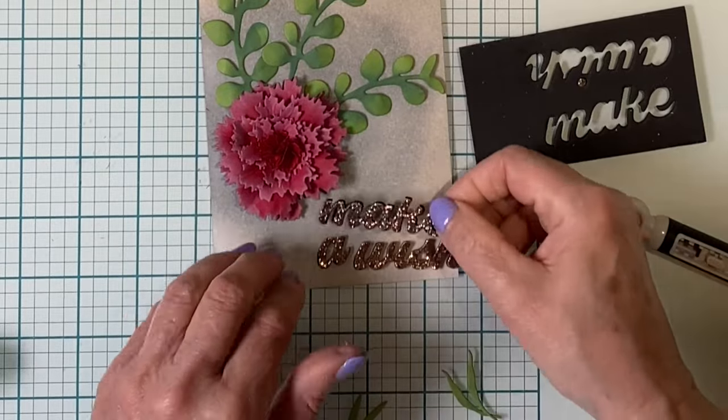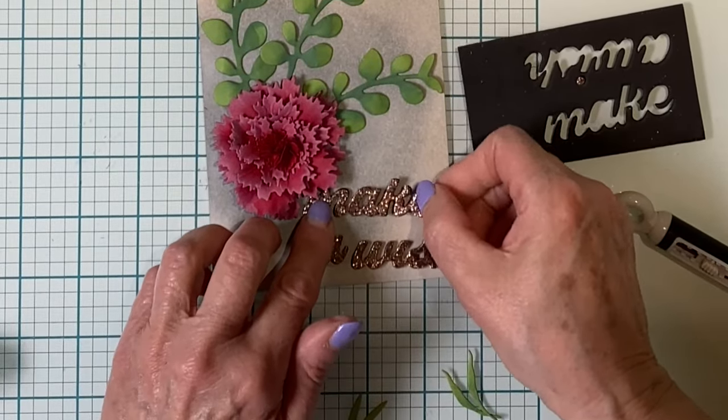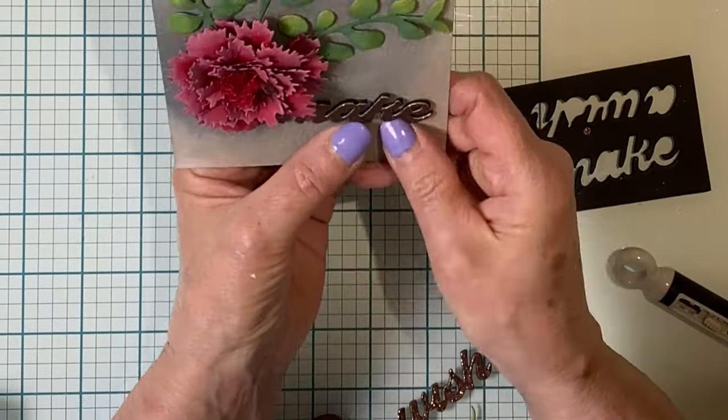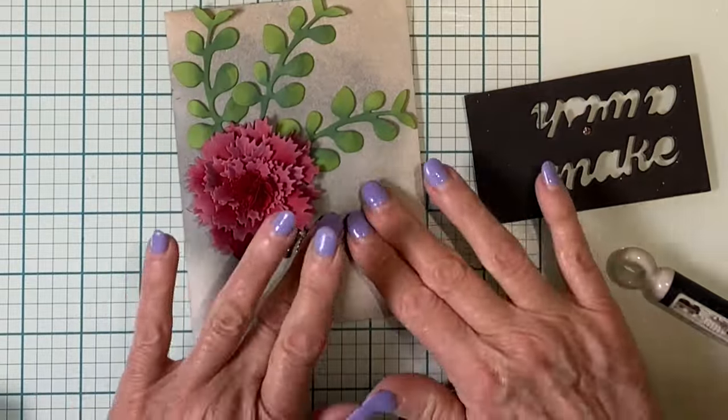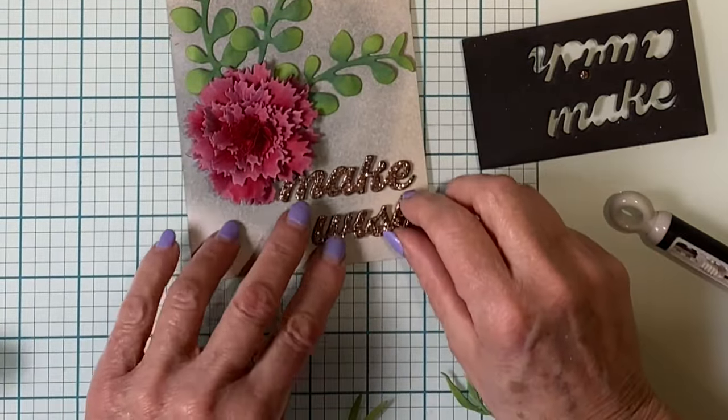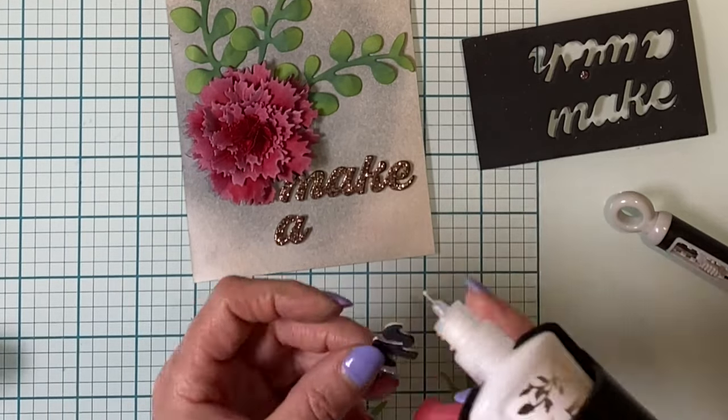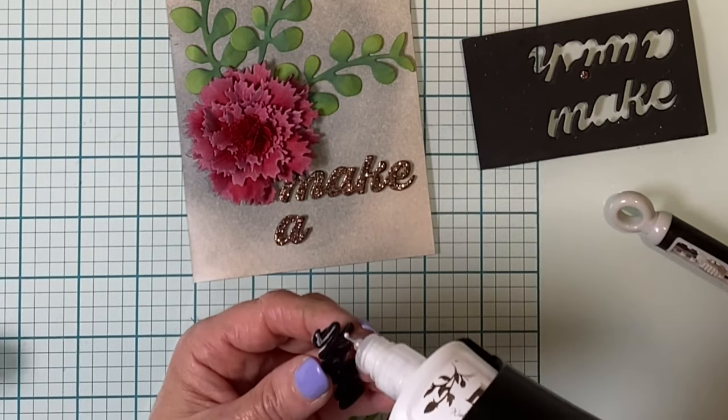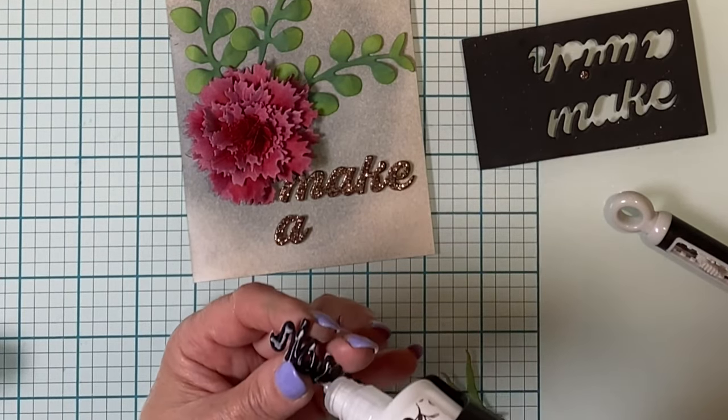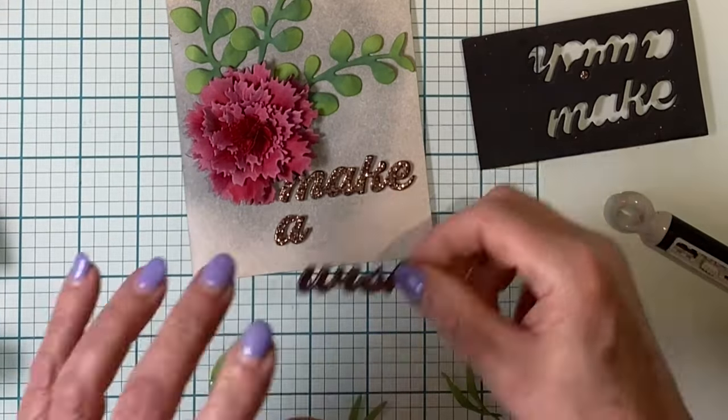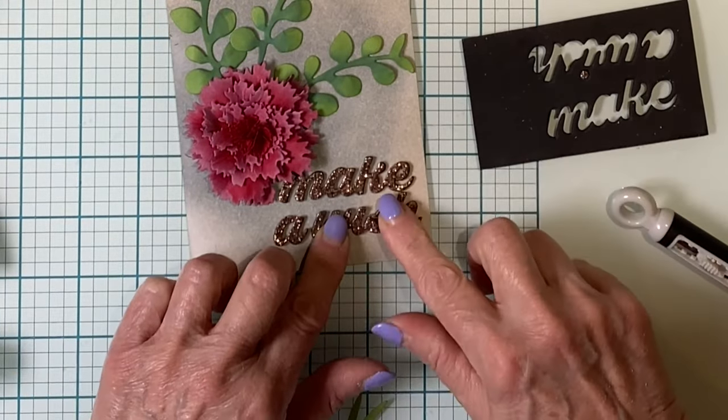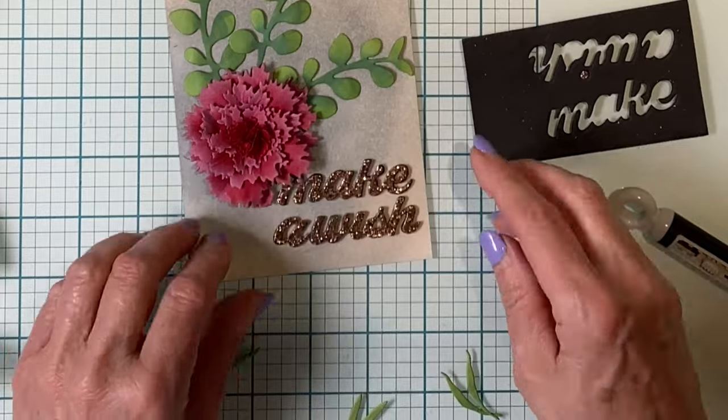I'll first adhere the word 'make,' tucking it just slightly underneath the bottom right-hand side of the carnation. I'll lay out the two words 'I wish' right below it. To make sure that the horizontal spacing is correct, I'm going to adhere the word 'wish' next. I want to ensure that there's a little bit of space between the top of the H and the word 'make.'